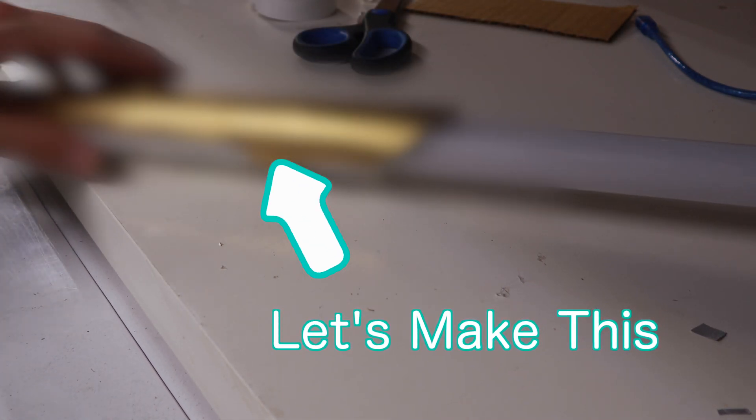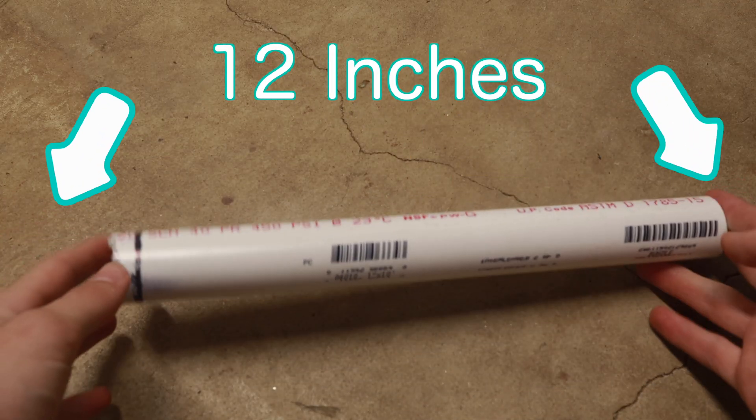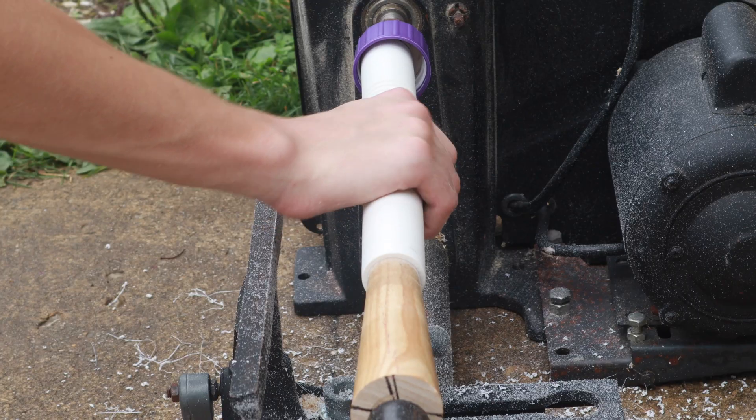Let's finish our lightsaber by crafting a hilt for it. I'll start by cutting a 12 inch piece of 1 inch PVC and securing it on the lathe.